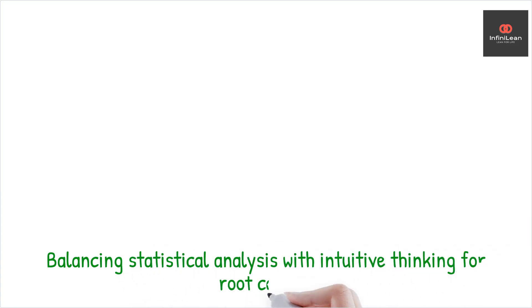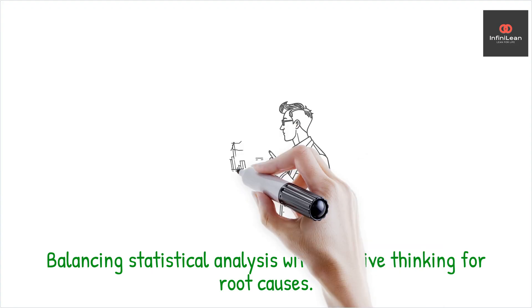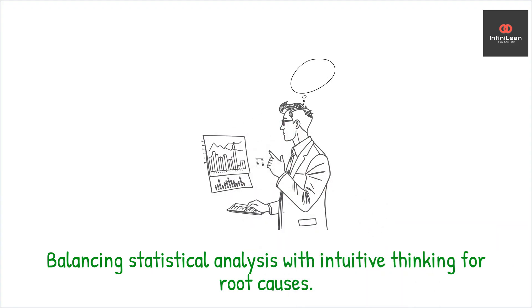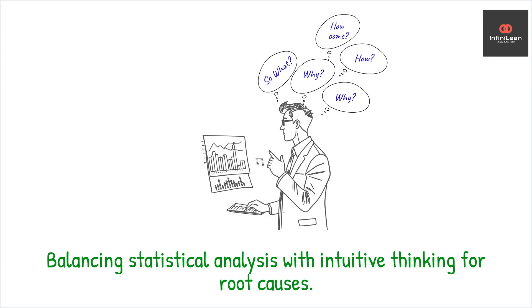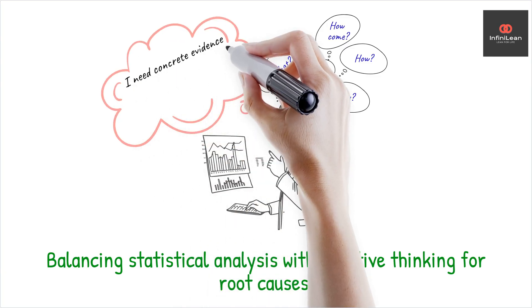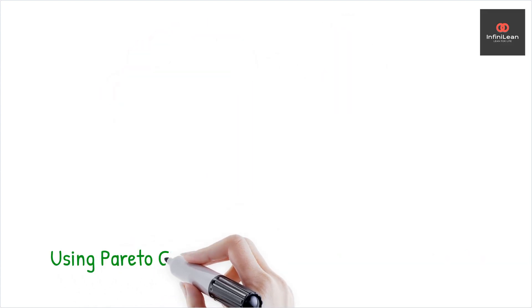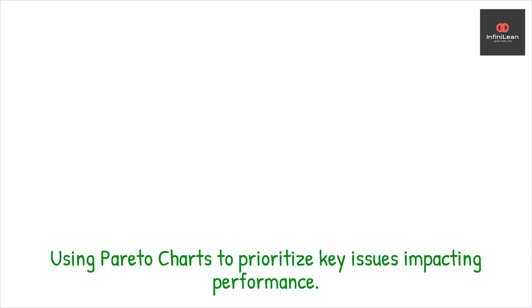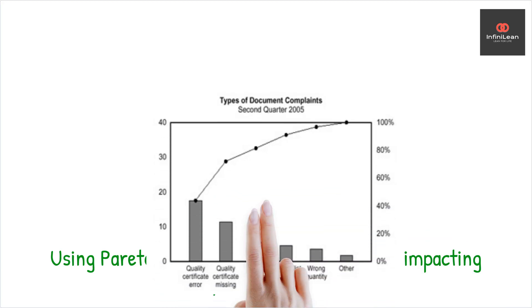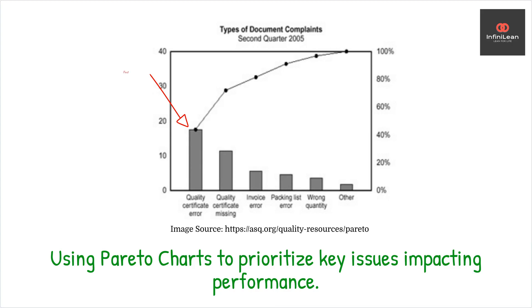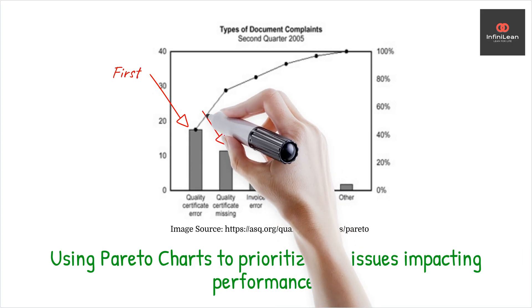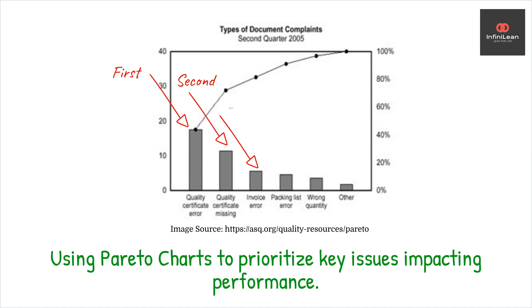However, it's not just about crunching numbers. Effective root cause analysis requires intuitive thinking alongside statistical rigor. We continuously probe, ask why, and peel back the layers until we identify the core issue. Root cause validation follows, ensuring that our findings are not mere assumptions but are backed by solid evidence. This phase often employs Pareto charts, allowing us to prioritize issues based on their impact. The goal is not to tackle every problem at once, but to focus on the few critical issues that significantly affect performance.